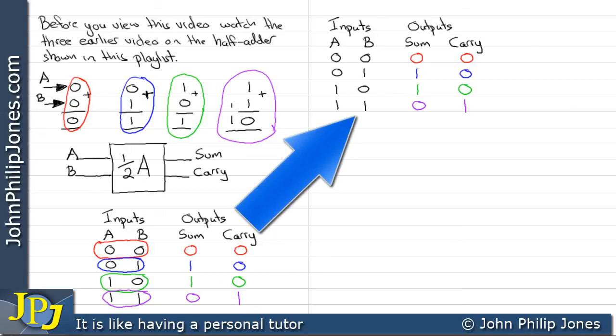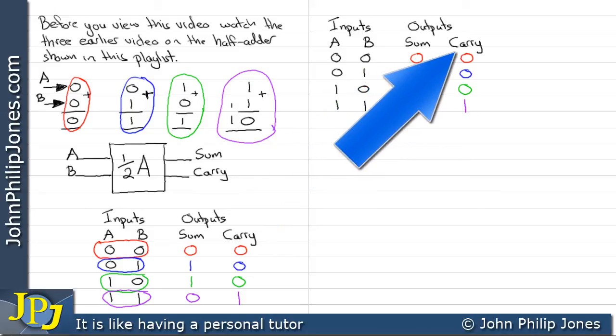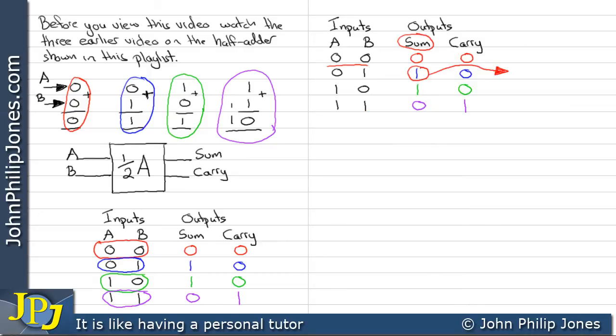Now I've copied the truth table here to allow us more space to actually derive the sum of minterms for the sum and for the carry. So starting with the sum we can see we have a 1 here which gives us the minterm NOT A and B. This gives us the minterm A and NOT B. Therefore the sum is NOT A and B or A and NOT B.